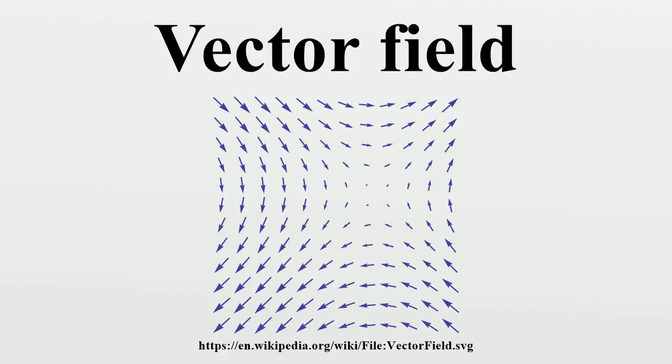A vector field in the plane, for instance, can be visualized as a collection of arrows with a given magnitude and direction, each attached to a point in the plane.